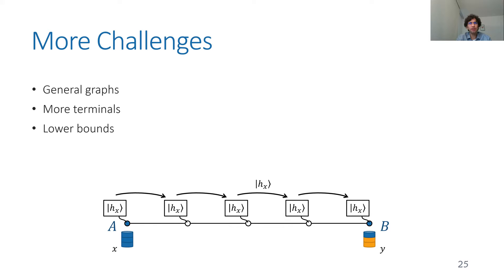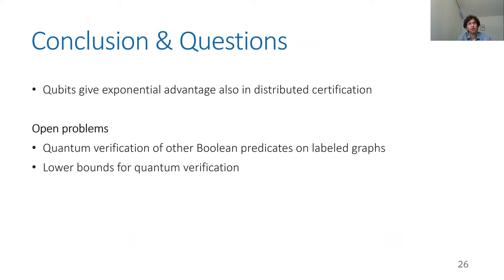Other challenges not discussed today include what happens on general graphs — not just a path — where you have to check equality on many different paths and may need more complicated certificates, and what happens with more than two terminals. We also prove a lower bound for the same problem in the non-quantum setting, even for the randomized case.